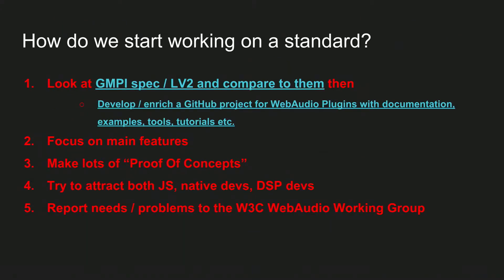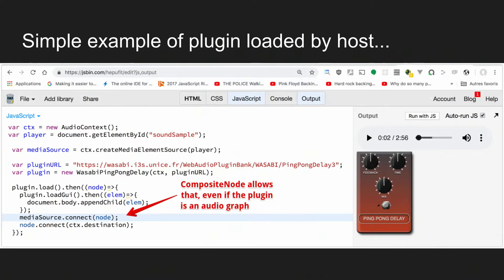We looked at the GMPI spec, added one column, and started to fill it in — sorting out the features most important for version one. We made lots of proof of concept by developing plugins, porting plugins, and porting applications by other developers to plugins. We found new problems and new use cases. We will also report our needs to the Web Audio Working Group, because we needed some debugging tools and things we couldn't have.